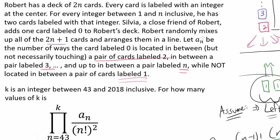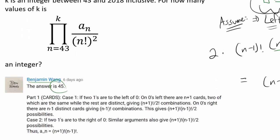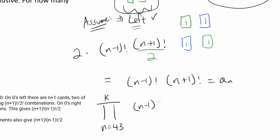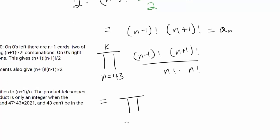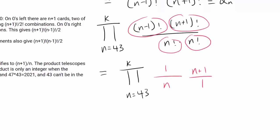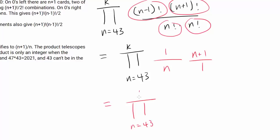Now we look at the product from n=43 to k of a_n over n factorial squared. With a_n = (n-1)! × (n+1)!, we divide by n! × n!. Here (n-1)! / n! = 1/n and (n+1)! / n! = n+1. So each term simplifies to (n+1)/n, and we have the product from n=43 to k of (n+1)/n.